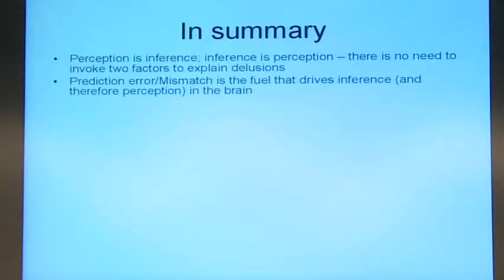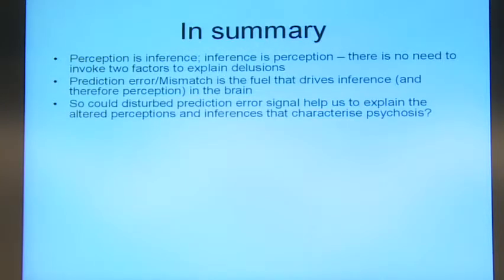I think that prediction error can be considered as a sort of fuel that drives inference and therefore ultimately perception. And I think this raises the possibility that a disturbance in the signal, the prediction error signal, could help us to explain altered perceptions and inferences, delusions, that characterize psychosis. Could that be the case? Well, I think there's some face validity.